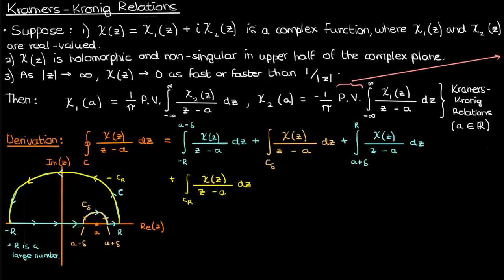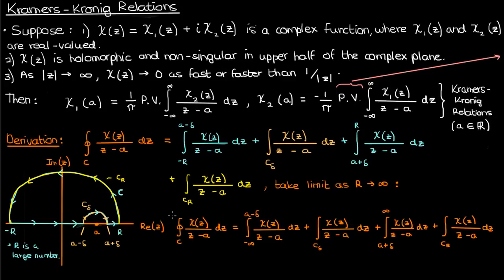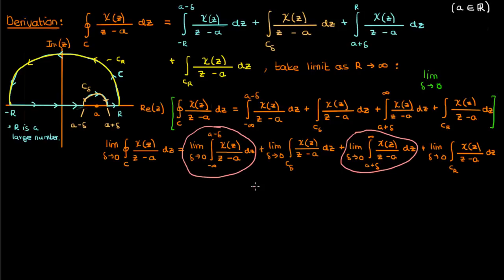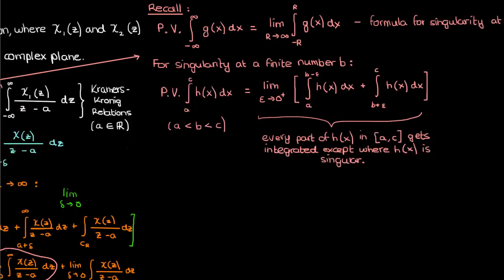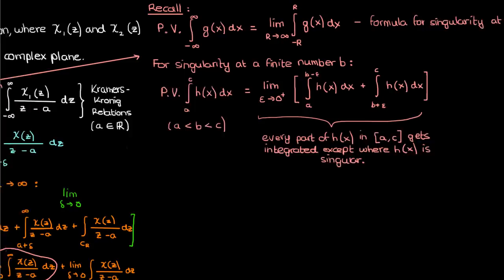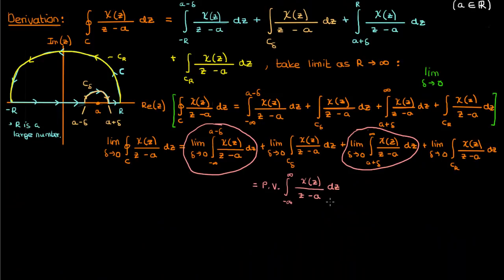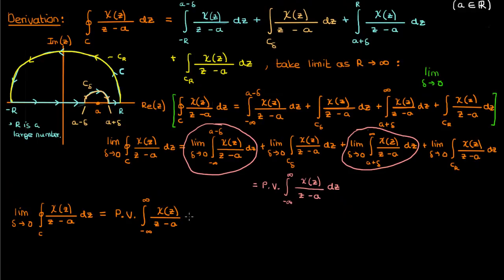The Kramers-Kronig relations involve integrals with infinite limits, but we don't have infinite limits right now. However, we did specify that R was a very large number, so we'll take the limit as R approaches infinity. When we do that, here's what we'll get for our integral over C. Let's then take the limit of this equation as delta approaches 0. On the right-hand side, combining the first and third integrals should, by definition, give us the Cauchy principal value of the integral of chi(z) over z minus A from negative infinity to infinity, according to the Cauchy principal value formula we defined when the singularity was at a finite number. The singularity in the function we're integrating is at z equals A because z minus A is in the denominator. Once we equate the sum of the first and third integral terms to the principal value, this equation is what we're left with.